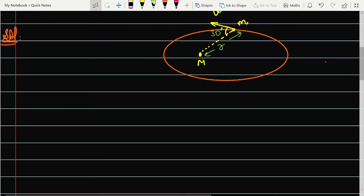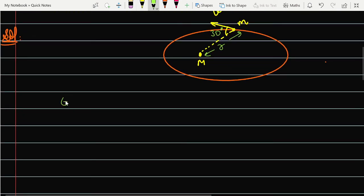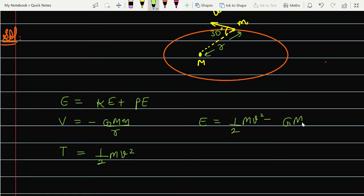So here we are talking about energy. The energy can be written as kinetic energy plus potential energy. The potential energy can be written as minus GMm over r, and the kinetic energy can be written as half mv square because velocity is v. So the energy value is half mv square minus GMm upon r.